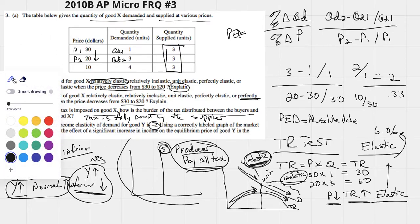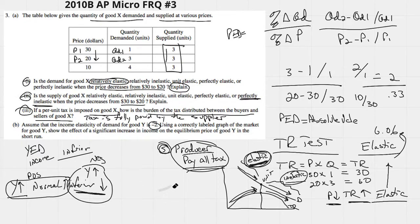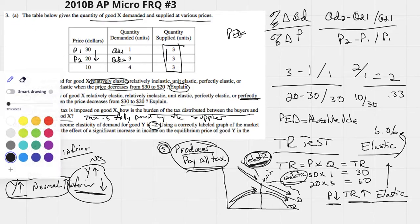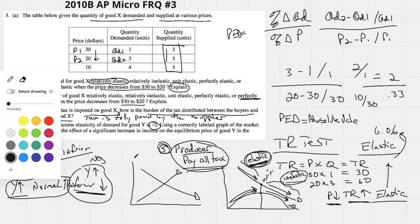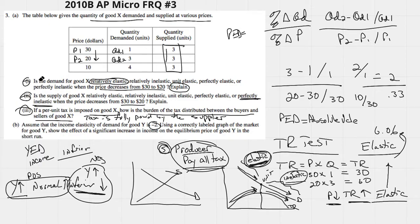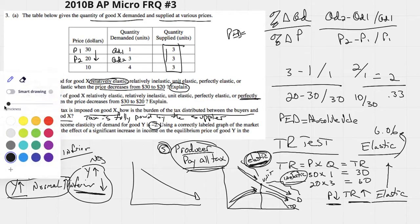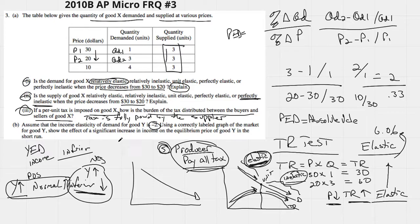They're saying that using a correctly labeled graph of the market for good Y show the effect of a significant increase in income on the equilibrium price of good Y. So, this is just sort of understanding your determinants of demand. We have obviously what's going on here. I don't even need the supply curve. I can really just get rid of that and just use a demand curve.